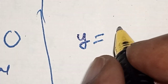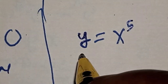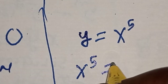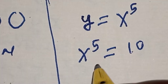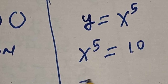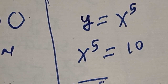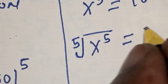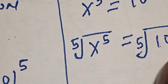Since y equals 10, and we know y equals s raised to power 5, we have s raised to power 5 is equal to 10. Let's take the fifth root of both sides: fifth root of s raised to power 5 is equal to the fifth root of 10.